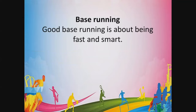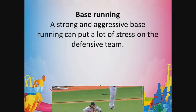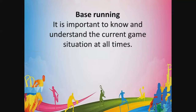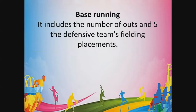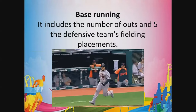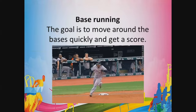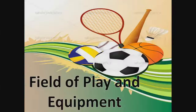The fifth basic skill in baseball is base running. Good base running is about being fast and smart — you need to watch the ball at the same time. A strong and aggressive base running can put a lot of stress on the defensive team. It is important to know and understand the current game situation at all times, including the number of outs and the defensive team's fielding placement. The goal is to move around the bases quickly and get the score by reaching the home plate.